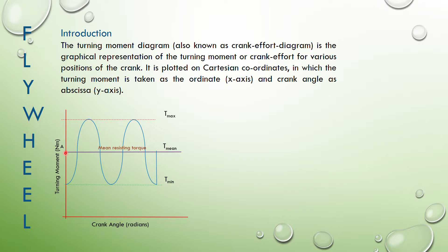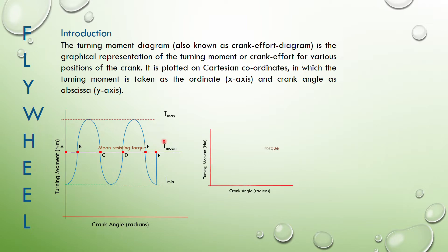On the diagram, I note down points where the horizontal mean resisting torque line intersects with the curve. I label these as points A, B, C, D, E, and F — you can also use 1, 2, 3, 4, 5. So point A is the first intersection, then B, C, D, E, and F. Another diagram shows the mean resisting torque line, with areas below it representing energy required by the machine.